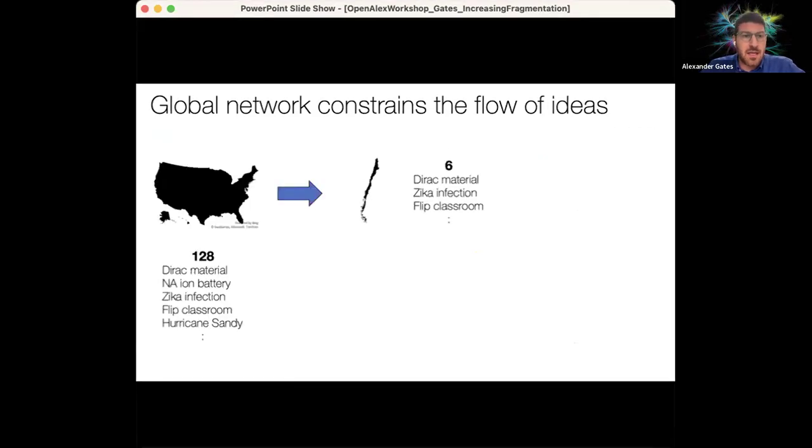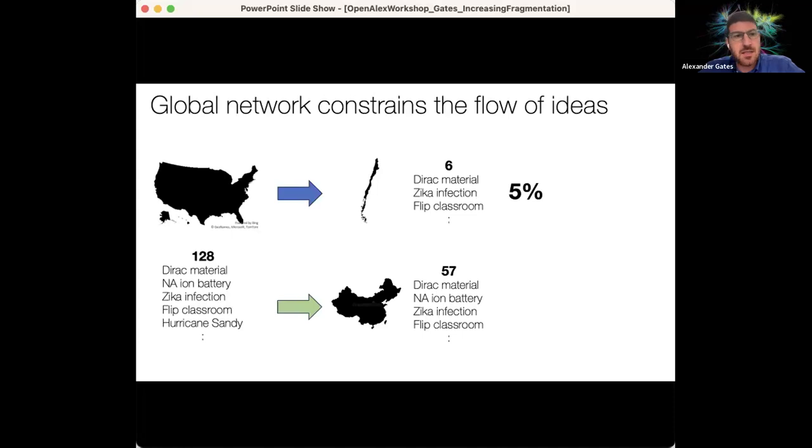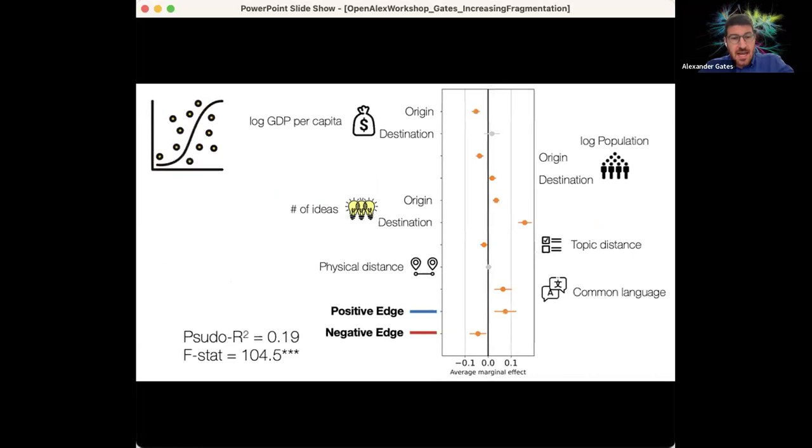And so what we can do is build a predictive model that says, the papers and all the ideas that emanated from the United States, what proportion of them are then at some point in time mentioned again in another country. And this model shows us that there are a bunch of factors that do influence that predictive capability, but the most important ones were the presence of positive or negative edges within this network. And having a positive edge increase the odds ratio of an idea diffusing between two countries by about 50%.